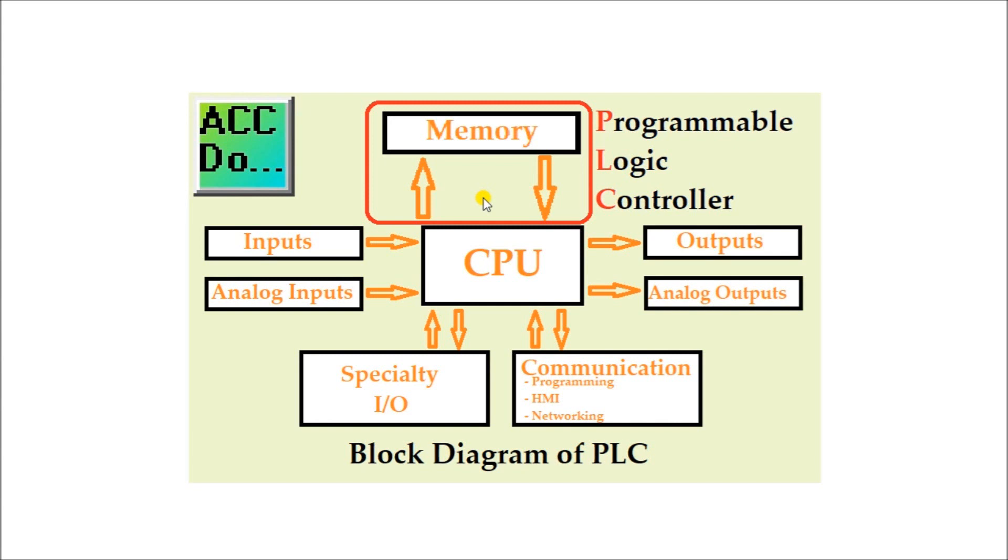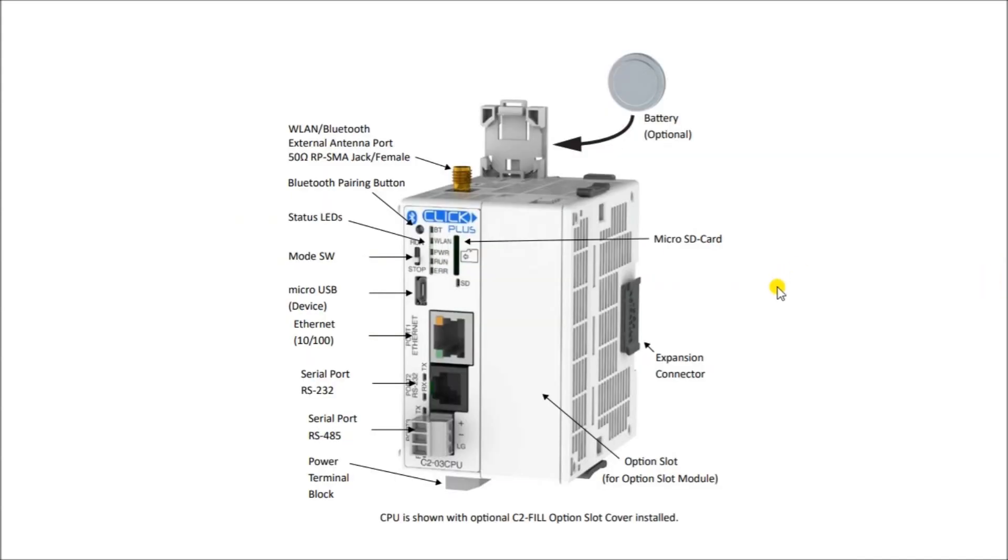Now let's take a look at a PLC program and data memory example. We'll have a Click Plus PLC and right off hand you can see if I look at this component diagram you'll see I have a battery here which is used to back up something and we'll take a look at the specifications to see what that is.